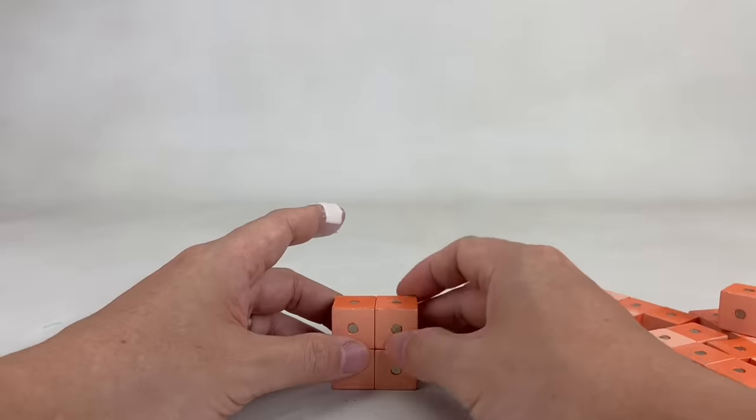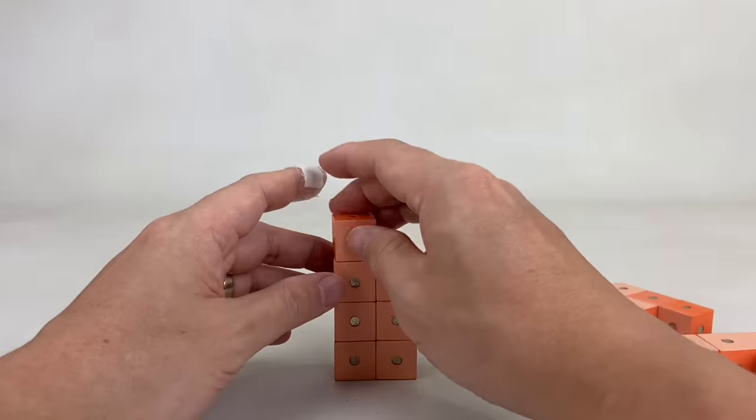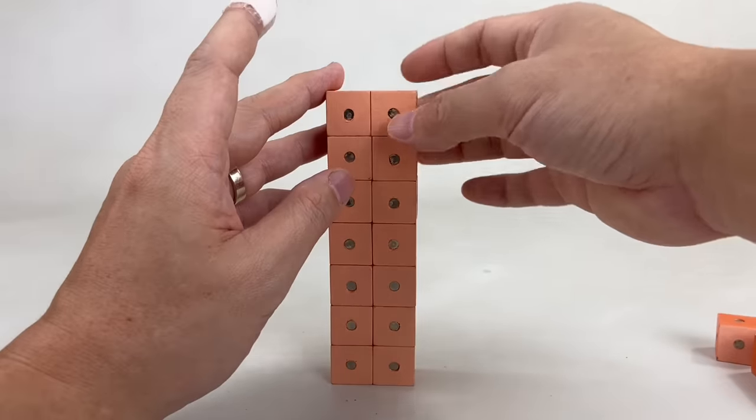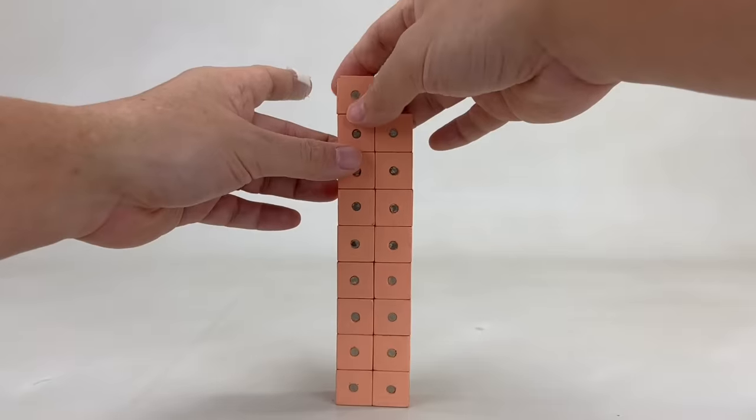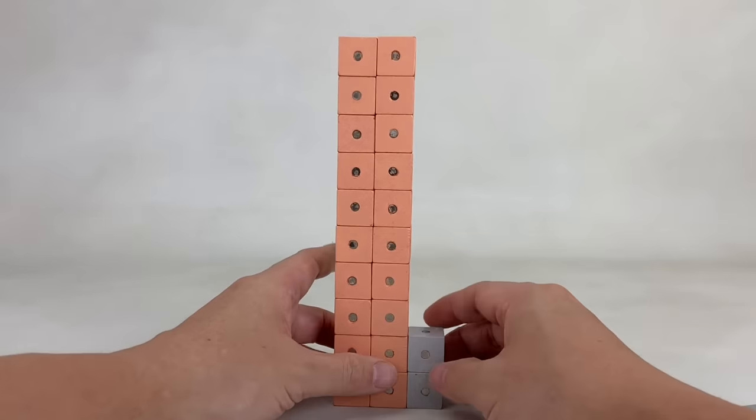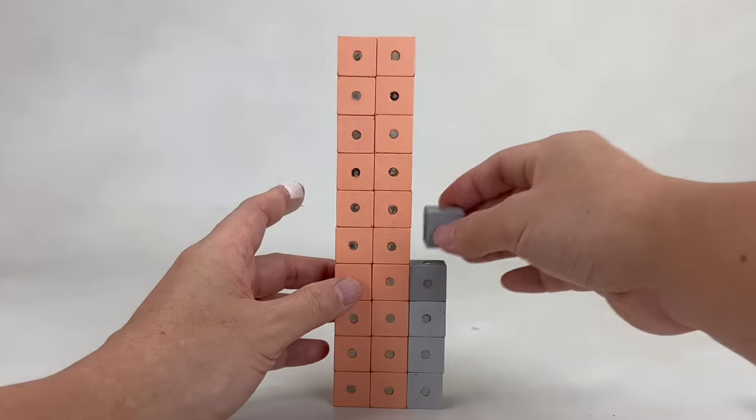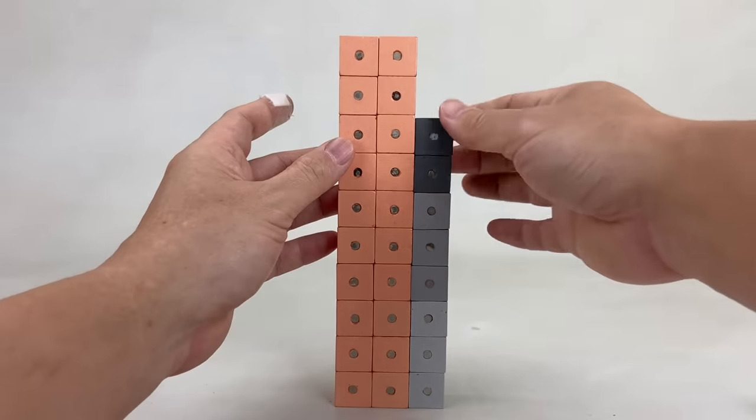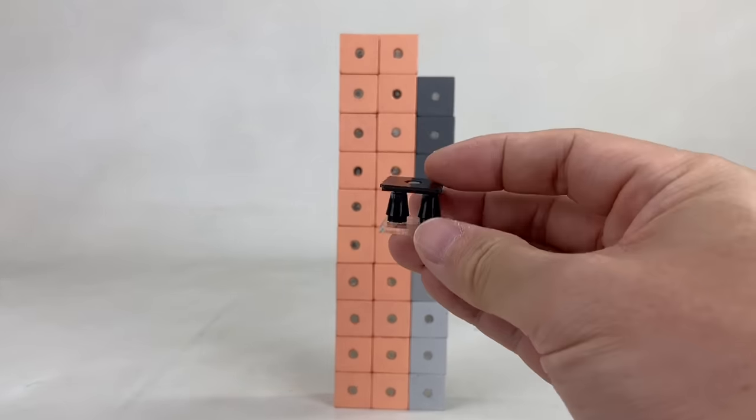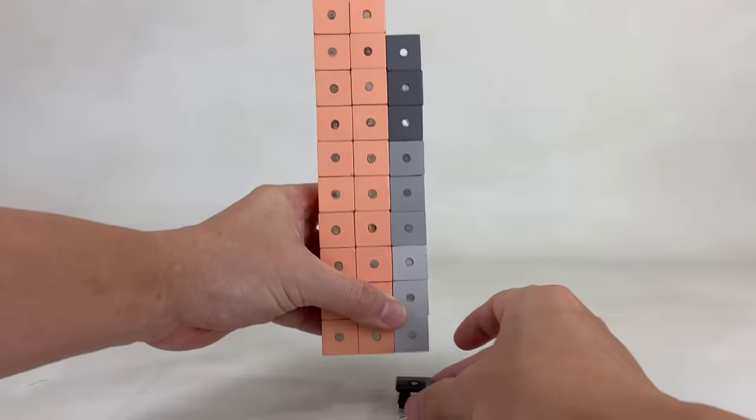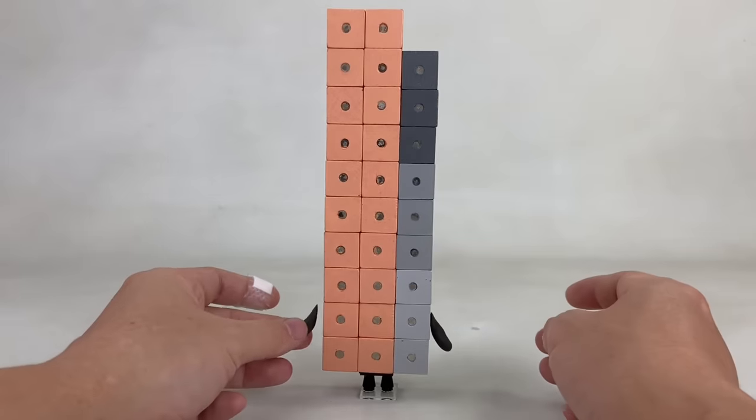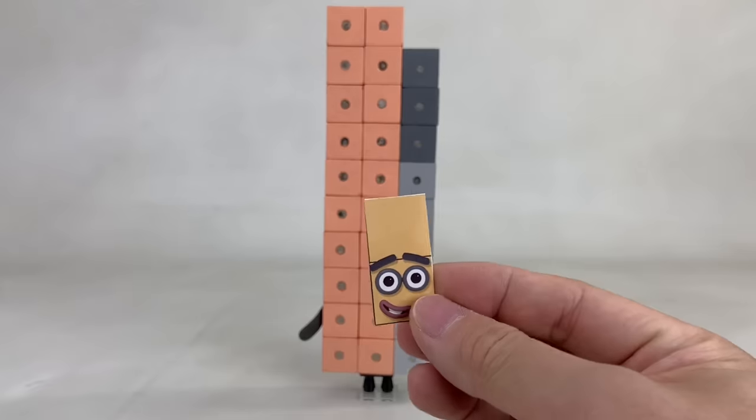Now let's build NumberBlock 29. He loves clubs. 29 is made up of 20 light orange blocks and 9 gray blocks in light, medium, and dark shades of gray. Stack the gray blocks on the right side like this, from light to dark.